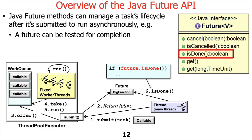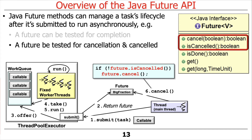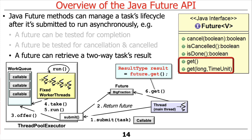Once you invoke an operation and get back a future, you can do various things with it. You can test it to see if it's finished — ask isDone, and if it's done, you know you can get the result. You can also check to see if the future has been cancelled, in which case you know you'll never get a result back. Likewise, you can cancel it — if you no longer need the result, you can go ahead and cancel it. And of course the most useful thing to do is get the results, which is a way of finishing up a two-way asynchronous call.